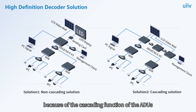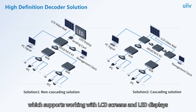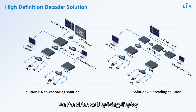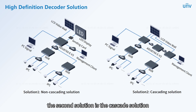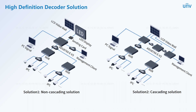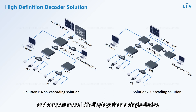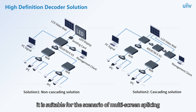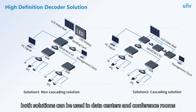Because of the cascading function of the ADUs, two solutions are offered. The first is the non-cascading solution, which supports working with LCD screens and LED displays, decoding front-end IPC video for video wall splicing display, and also supports local PC signal splicing on the wall. The second is the cascade solution: cascading ADUs provides more powerful decoding capability and supports more LCD displays than a single device, suitable for multi-screen splicing. Both solutions can be used in data centers and conference rooms.